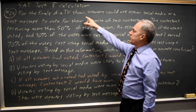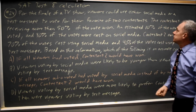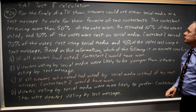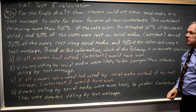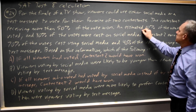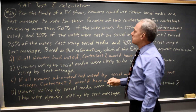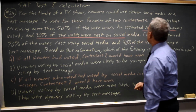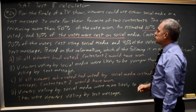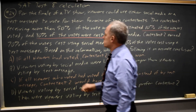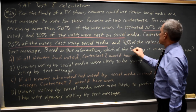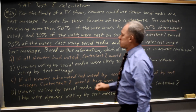In this case, for the finale of a TV show, viewers could use either social media or a text message to vote for their favorite of two contestants. The contestant receiving more than 50% of the vote won. An estimated 10% of viewers voted, 30% of votes were cast on social media, and contestant two earned 70% of the votes cast using social media and 40% of the votes cast using a text message.